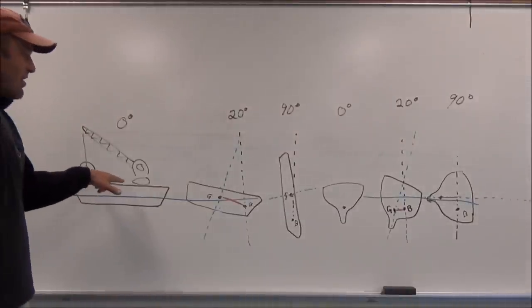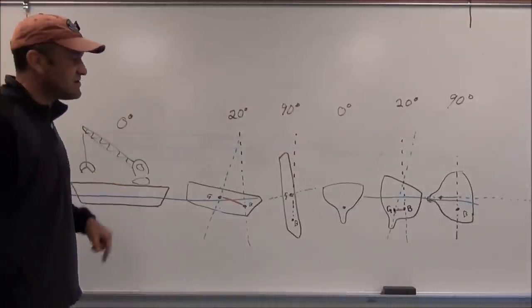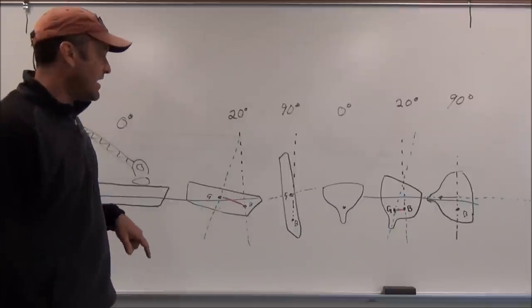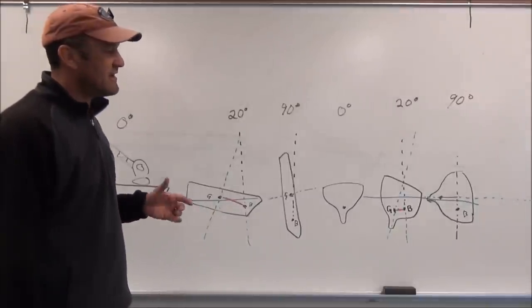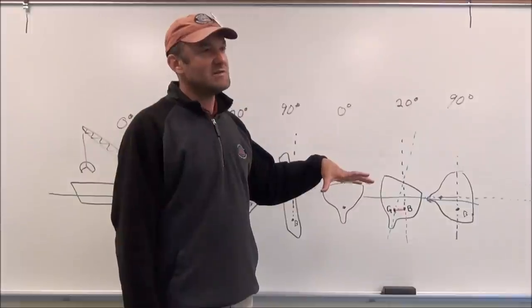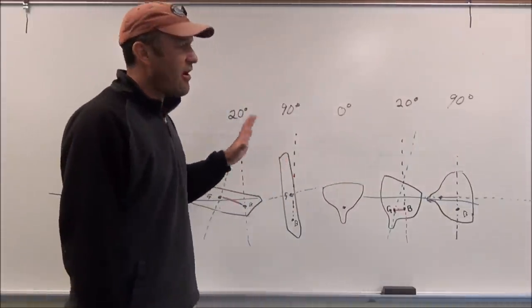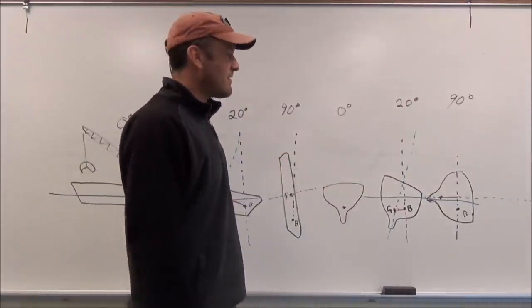So initial is it's hard to get it to tip initially, and ultimate stability is once she's gone over, she'll come back easier. So it's hard to keep her over really far.